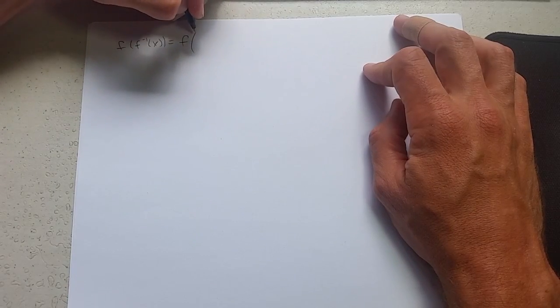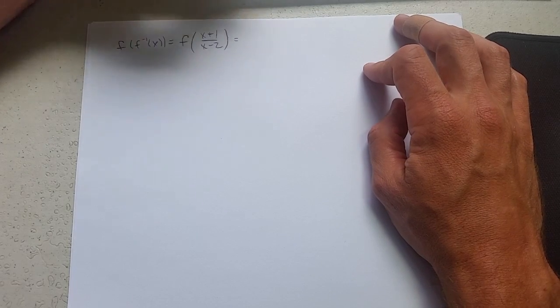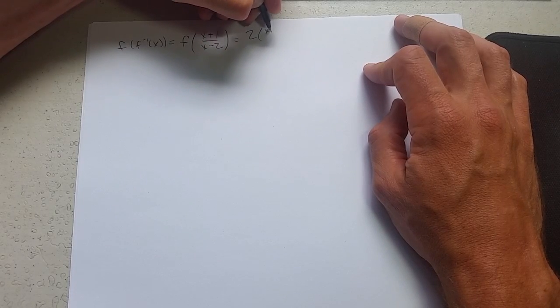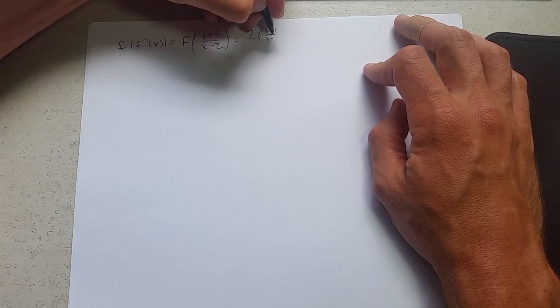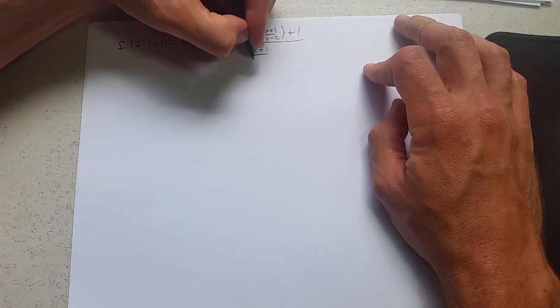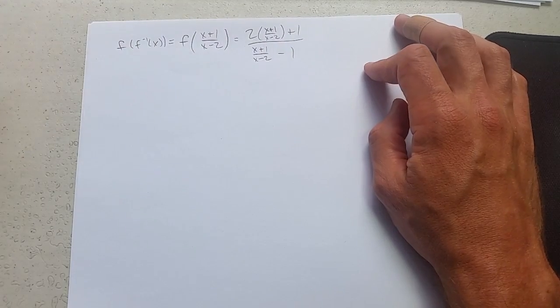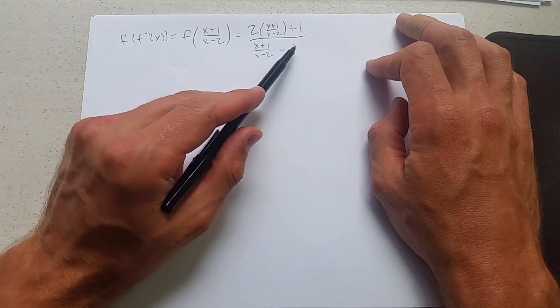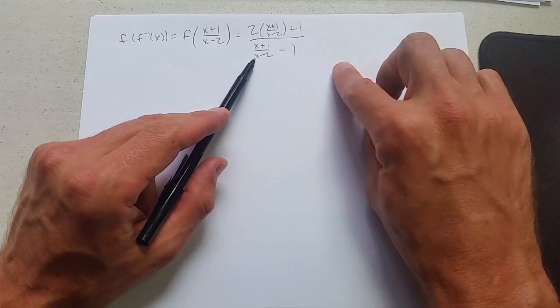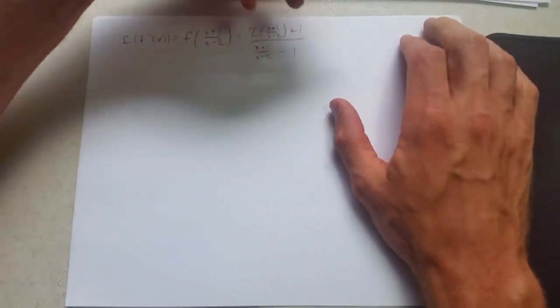So we're working inside out. f inverse of x. x plus 1 over x minus 2 plus 1 divided by x plus 1 over x minus 2 minus 1. How in the world do we simplify this? We do need to multiply by the reciprocal of the denominator, but we cannot do it until we have only one term on the bottom. We cannot have a plus or minus here.